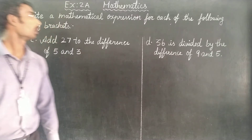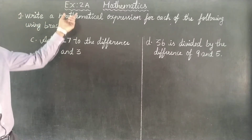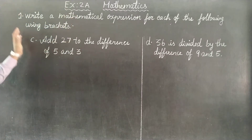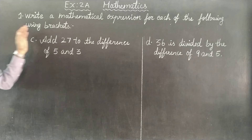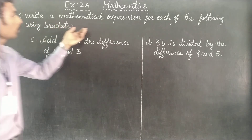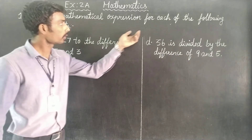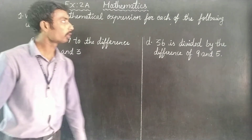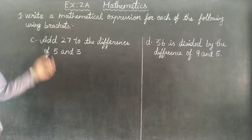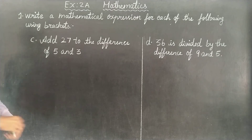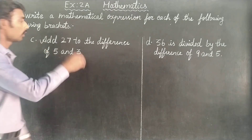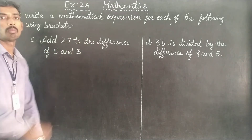Dear students, in this class, exercise 2a. First, write a mathematical expression for each of the following using brackets. Let's look at words c and d.